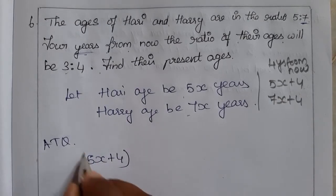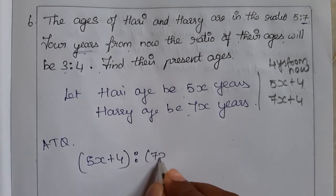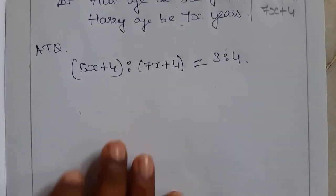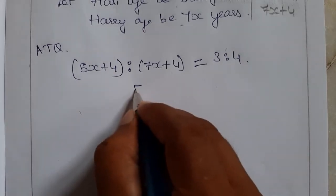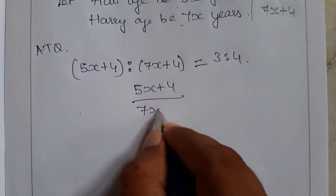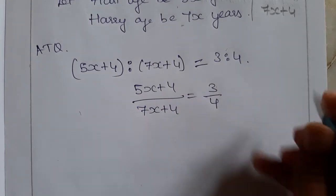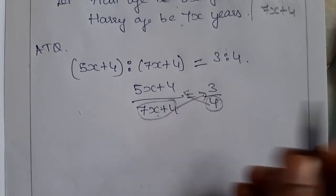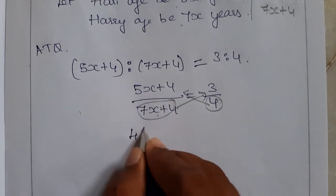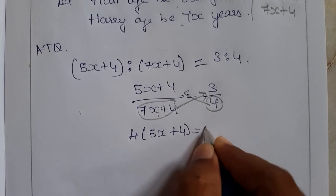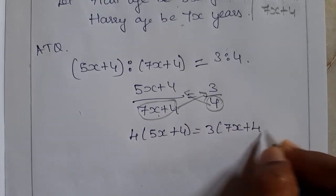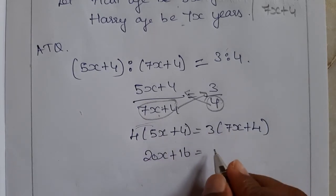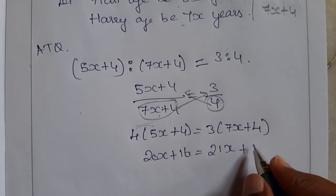So, 5x plus 4 to 7x plus 4 equals 3 to 4. We can write the ratio in fraction form: (5x plus 4) divided by (7x plus 4) equals 3 by 4. Cross-multiplying gives 4 into (5x plus 4) equals 3 into (7x plus 4). Expanding: 20x plus 16 equals 21x plus 12.